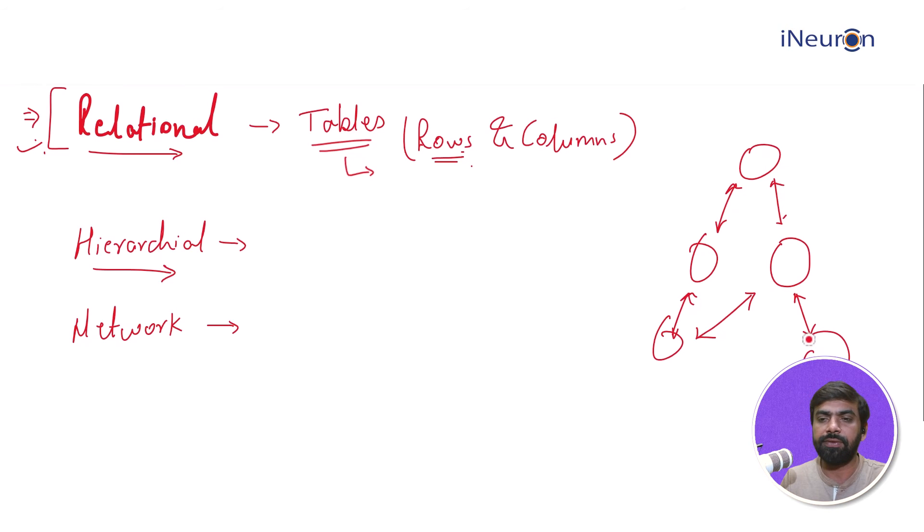Not very common - both hierarchical and network. Then we have others as well, something like object-oriented. Object-oriented databases majorly store data in the form of objects. This is good for storing complex data, especially images and videos. This is slightly better than relational, hierarchical, or network databases.